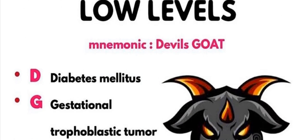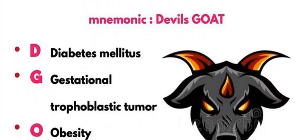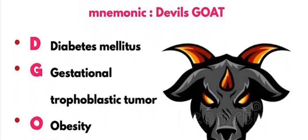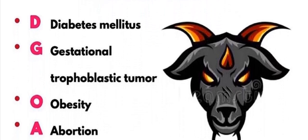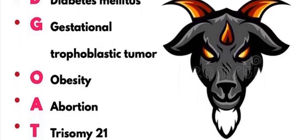O is for Obesity or fatty — the alpha-fetoprotein level is very low. A is for the different types of Abortion or miscarriages — alpha-fetoprotein level is very low.